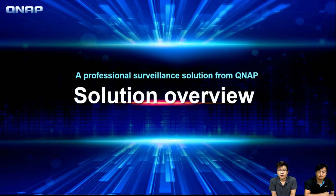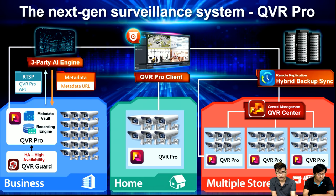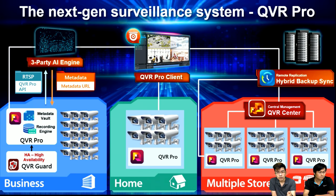For the solution overview, the diagram has three parts. The middle green section is for home users. The left side is for business — small projects, maybe under 64 channels. The right side, multiple stores, is for channel quantities above 64 or even 100. Allen will explain the product architecture.